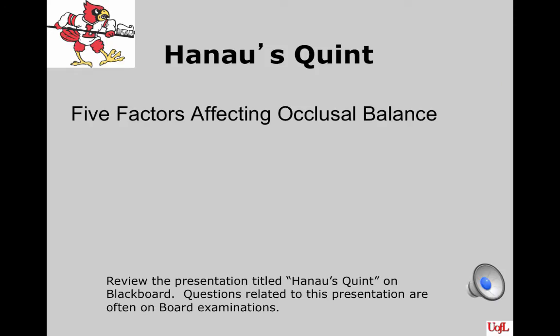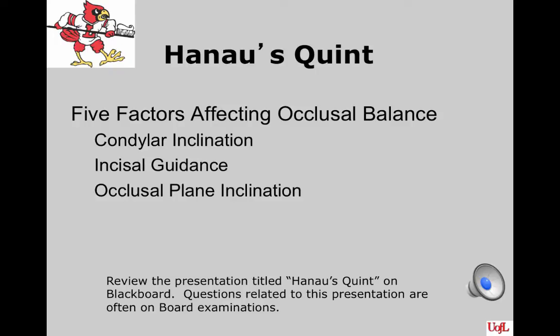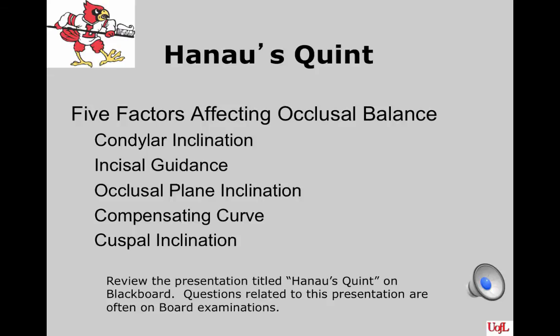Hanau's Quint is an important ingredient of complete denture education — there is an entire lecture on it available on Blackboard that's worth reviewing. There are five factors that affect occlusal balance: condylar inclination, incisal guidance, occlusal plane inclination, compensating curve, and cuspal inclination.